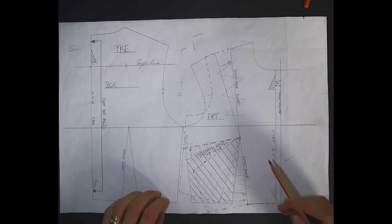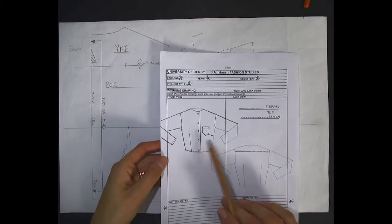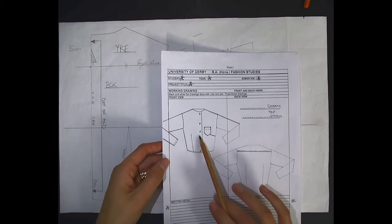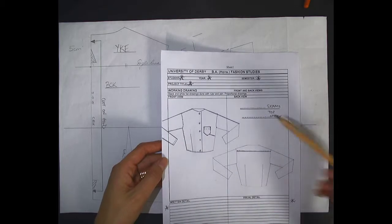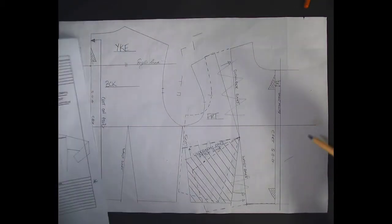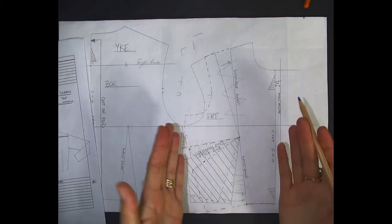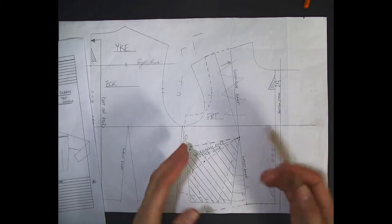What I'm going to show you now is how to trace off the pattern pieces. In the end, we want to create this top where one side will have the waist dart and one will have the underarm dart. They're both currently on this draft.